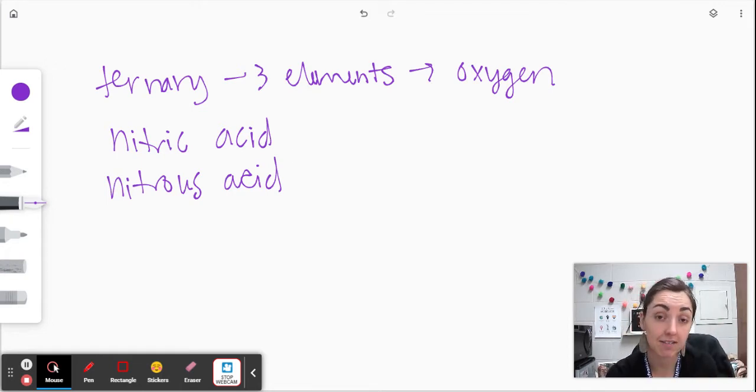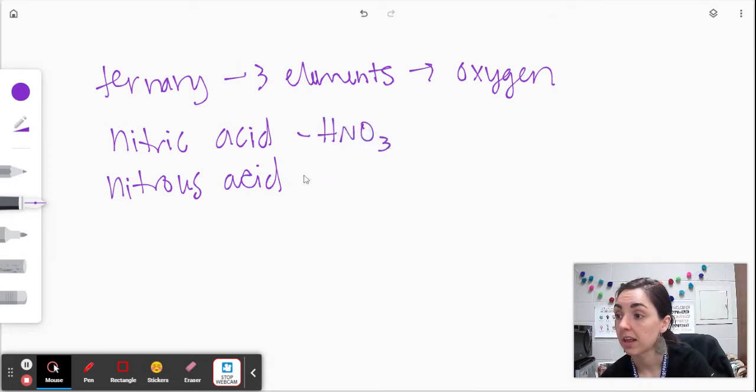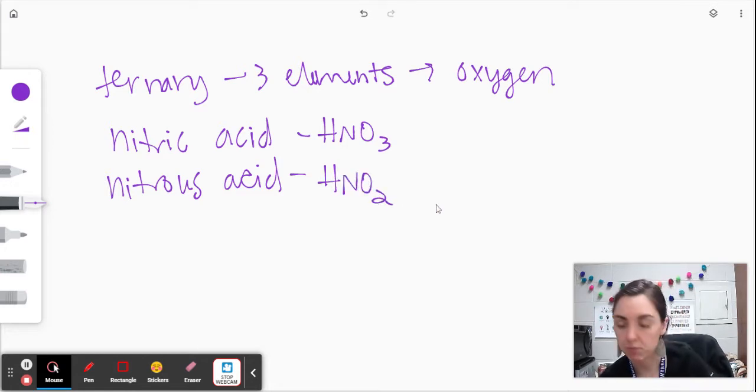They sound really similar. Notice that there's no hydro out front. So we know hydronitric acid is H3N, but nitric acid, not so much. Nitric acid is HNO3 and nitrous acid is HNO2.